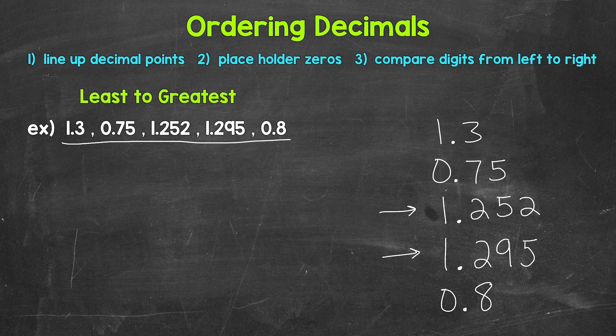So for 1 and 3 tenths, we need a placeholder zero here and here. For 75 hundredths, we need a placeholder zero here. And for 8 tenths, we need a placeholder zero here and here.